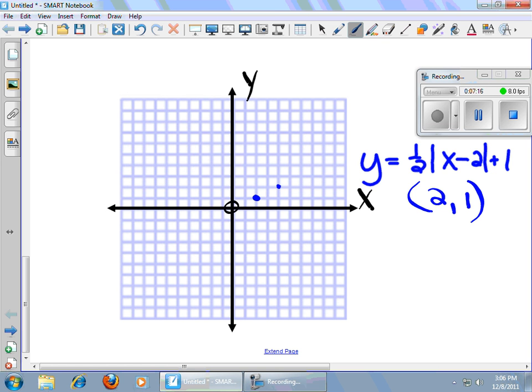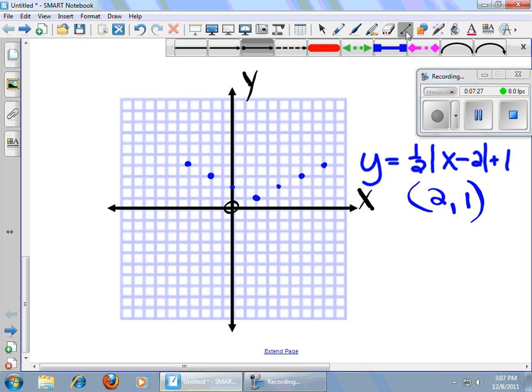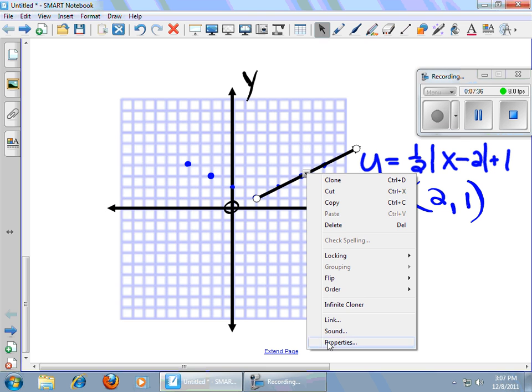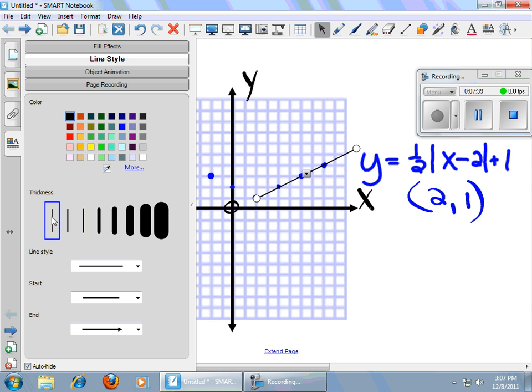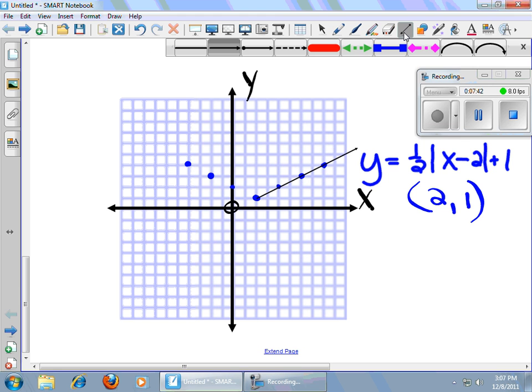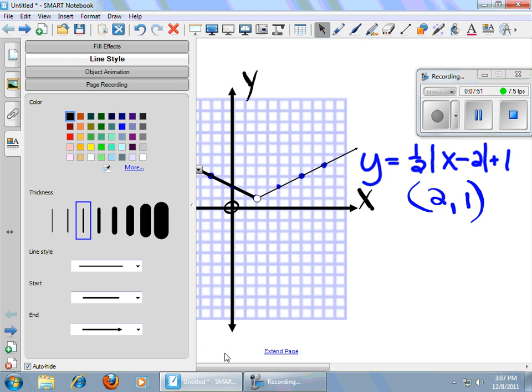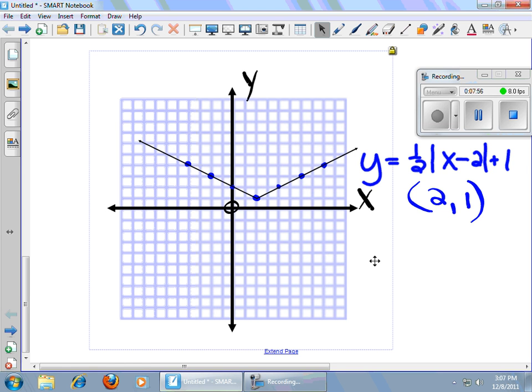And my slope is one-half. Rise one, run two. Rise one, run two. Rise one, run two. Up one, back two. Up one, back two. Up one, back two. And I'll go ahead and draw my line, my V, that is. I'll make him a little bit thinner. I'm going to leave him black so that he stands out. There's my graph.